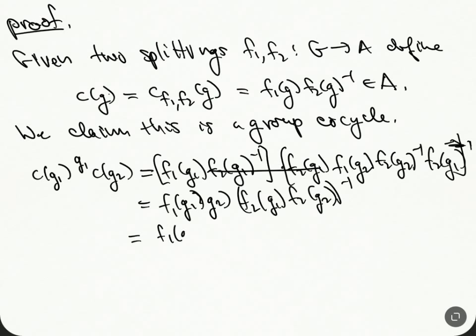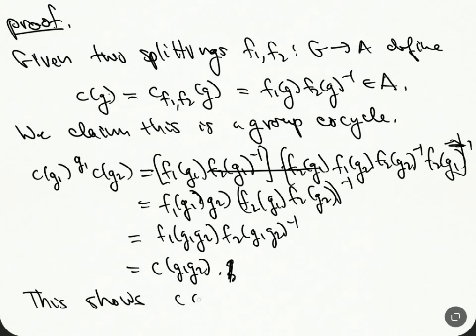Let's do F₂ of (g₁·g₂)⁻¹. So this is an inverse up here. And so this is equal to F₁(g₁·g₂). And this is a group homomorphism. So this is F₂ of (g₁·g₂)⁻¹, which is C(g₁·g₂). So this proves that C is a group cocycle with respect to that conjugation action.